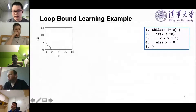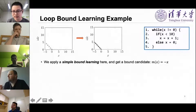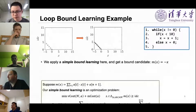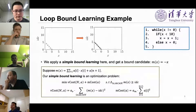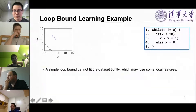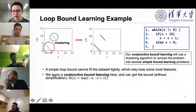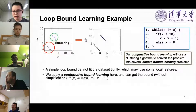For the current dataset, we apply simple loop bound learning as an optimization problem with two terms: v_cost, which makes the bound closer to data points, and m_cost, which makes the bound form simpler. However, one simple bound may not fit the whole dataset tightly, so we propose conjunctive loop bound learning to learn more local features. Our conjunctive bound learning uses a clustering algorithm to convert the problem into several simple bound learning problems.